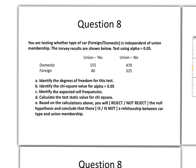In question 8, we're doing a contingency analysis on a 2x2 table, and we're testing whether the type of car, foreign or domestic, is independent of union membership. So members of unions, you see the grid below in the table, and we want to test for alpha of 0.05.